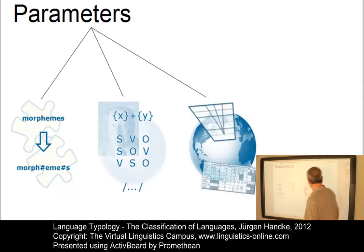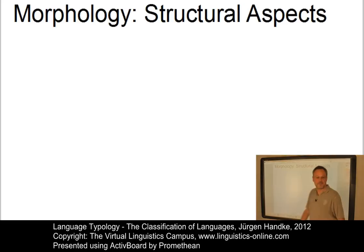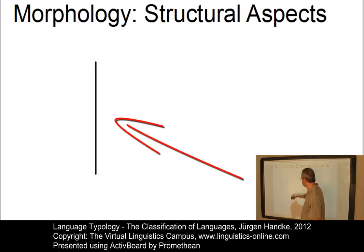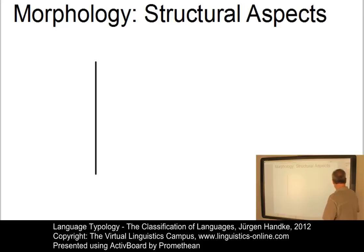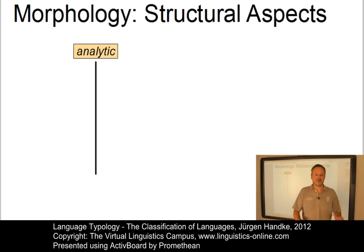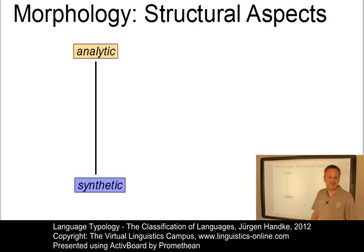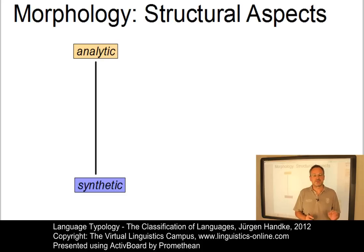Let us start with structural aspects. Languages can be morphologically classified on the basis of the inflectional structure of their words, thus in terms of a continuum. At one extreme of this continuum we find so-called analytic or isolating languages whose words have little or no internal structure. At the other extreme we have synthetic languages which allow the analysis of their words into smaller parts or morphs. Let us look at these two extremes in more detail.